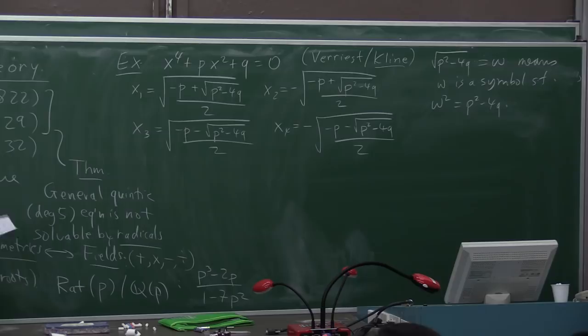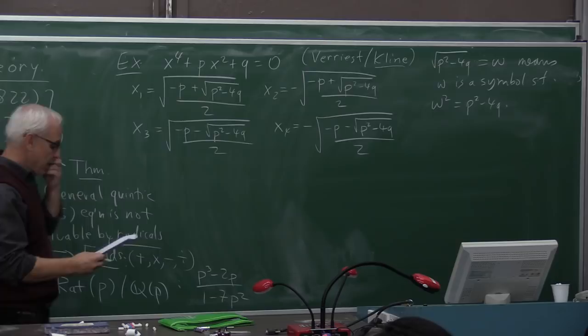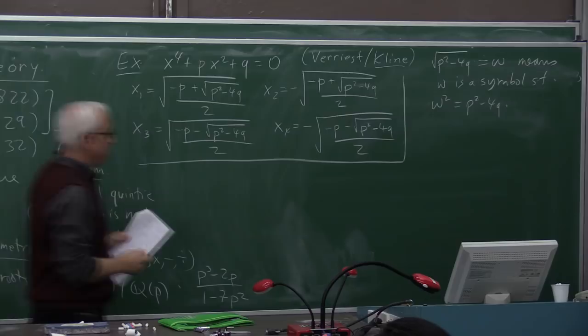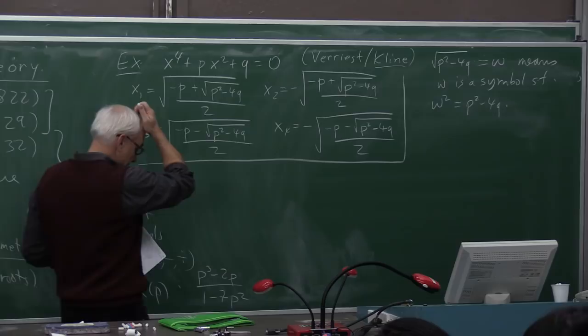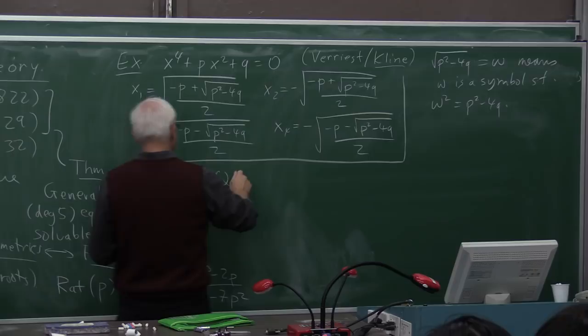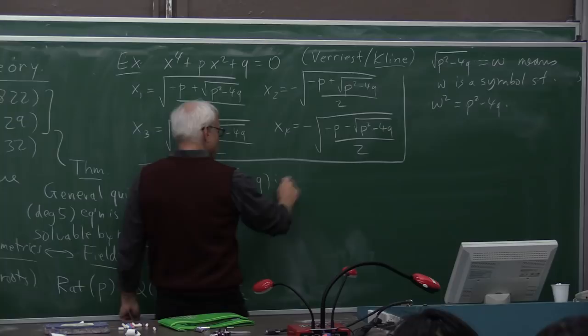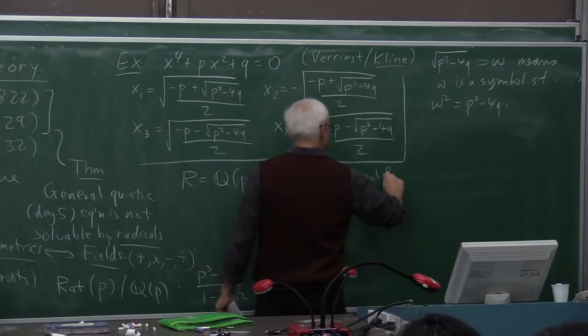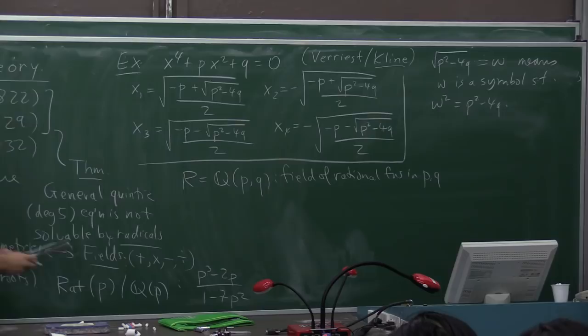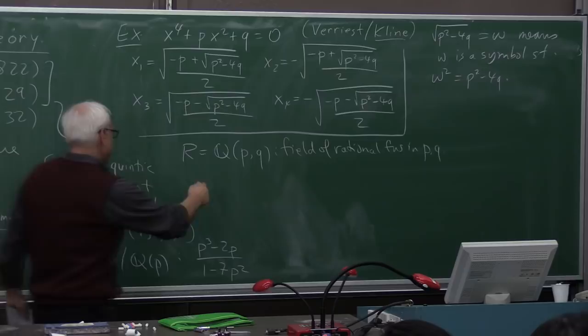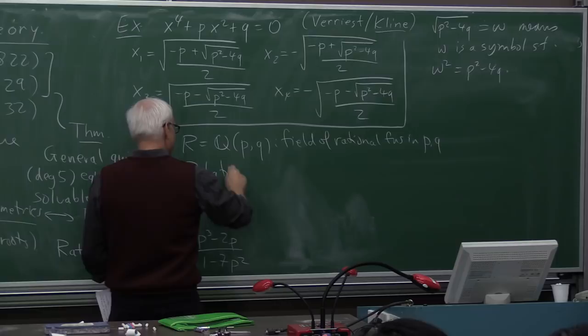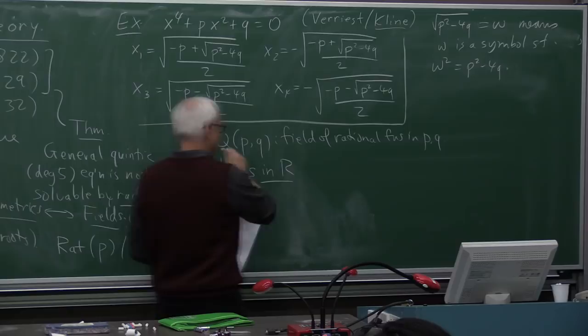All right, so what would Galois have done to try to solve this equation if we didn't already know this? So let's have a look at relations satisfied by these four roots, x1, x2, x3, and x4. First, we should introduce a field. So let's let R be Q adjoined p and q. p and q are exactly these variables that are appearing there. So this is the field of rational functions in variables p and q.